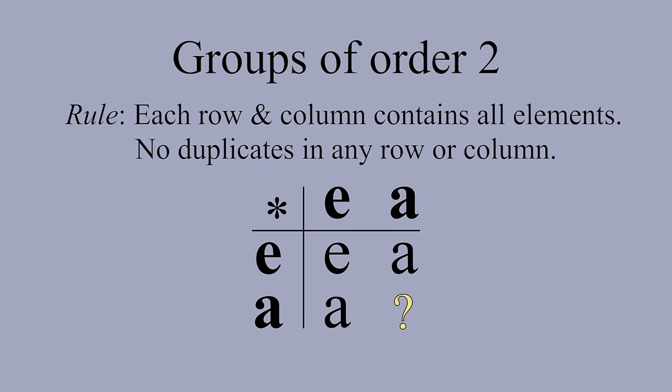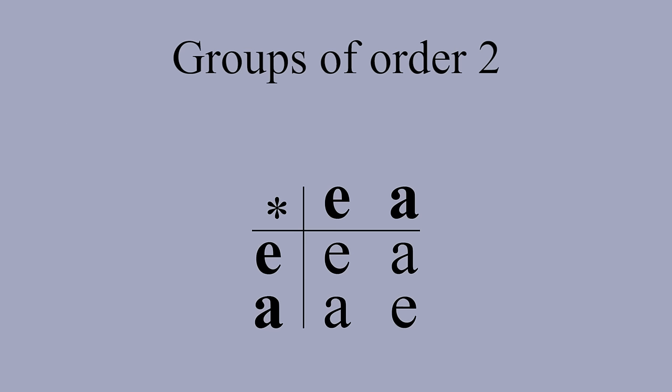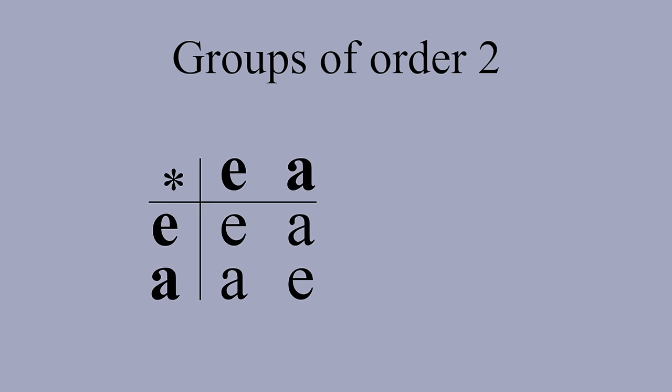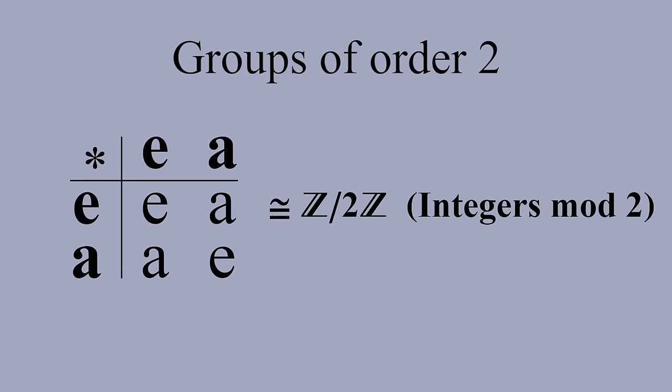Since the second row already contains A, this means the last square must be E. So there's only one group of order 2. It turns out that this is the same group as the integers mod 2. Try to convince yourself of this by making the Cayley table for the integers mod 2 under addition, then comparing the two tables.